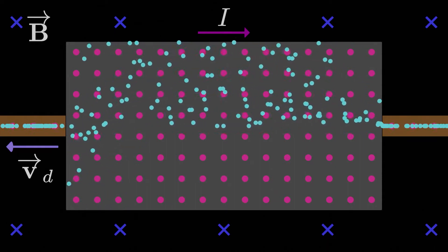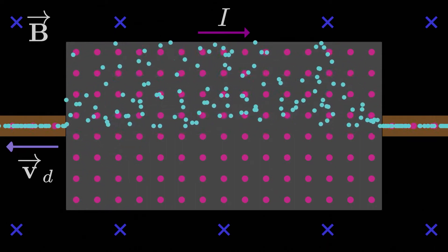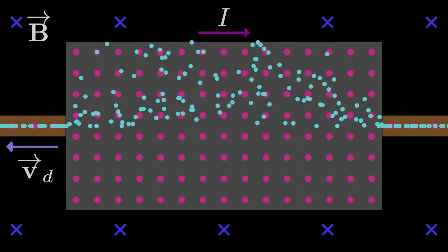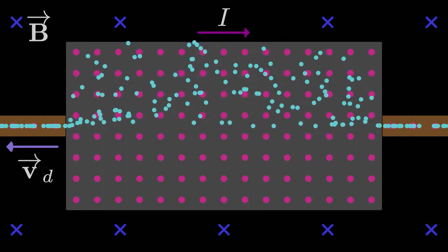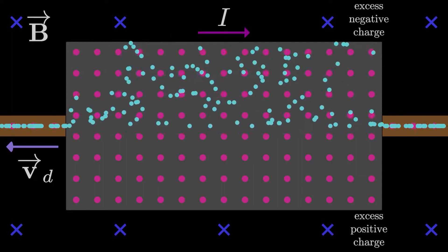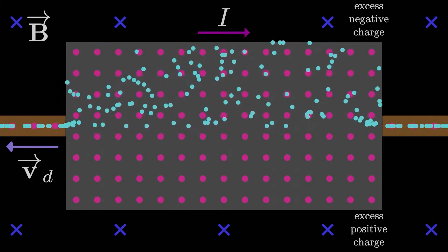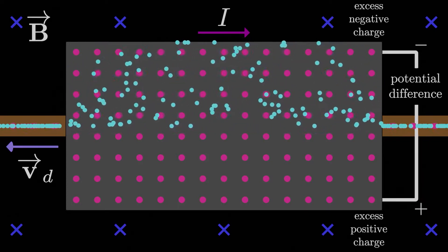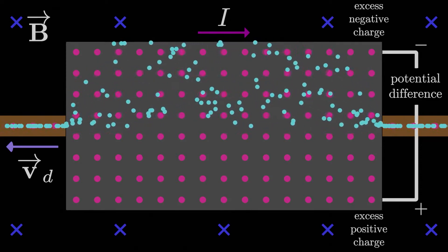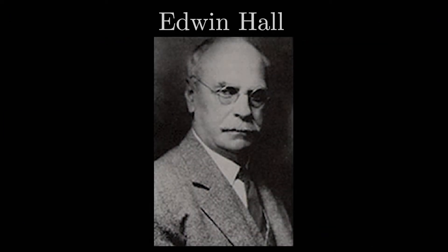The catch is, while the electrons are deflected upwards by the magnetic field, they now feel an attractive downwards electric force towards the excess positive charge because a potential difference now exists between the top and bottom of the slab. This is what's known as the Hall effect, named after Edwin Hall who discovered it.